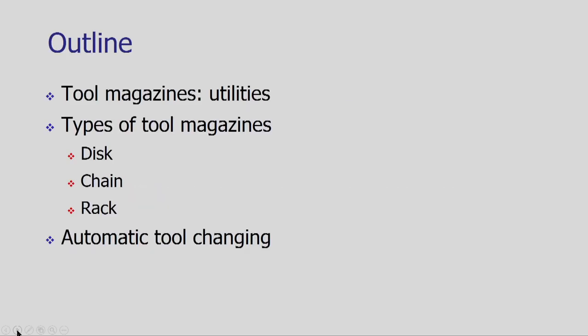CNC machine tools are an integrated and important element of an automated manufacturing system. The productivity of the entire tool room or automated manufacturing system depends upon tool changing — how efficiently we can change, handle, store, and maintain the tool. The crucial element in all these operations is the tool magazine.